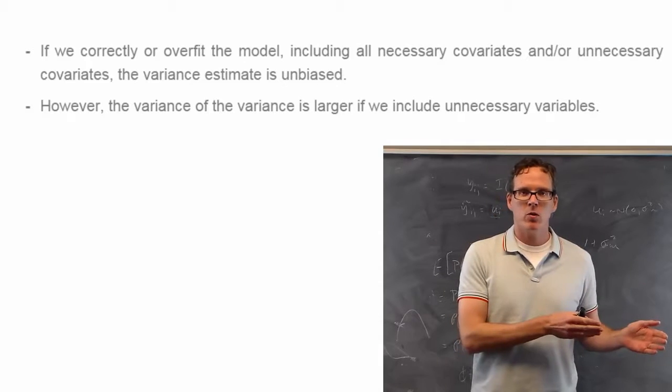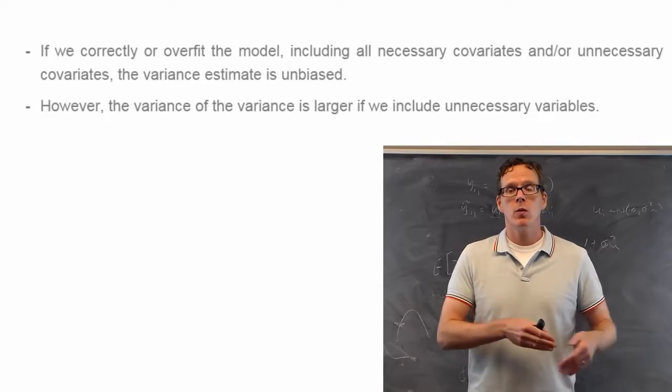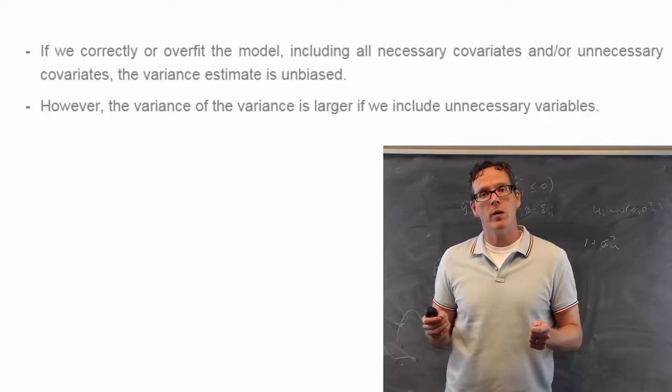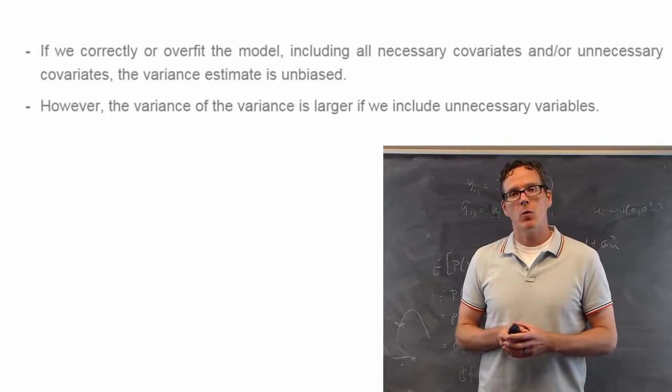If we omit, as we discussed before with coefficients, if we omit variables then we get bias. If we include variables, then we get a less reliable estimate. So it's roughly the same impact going on.